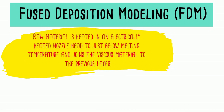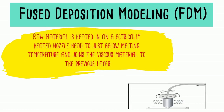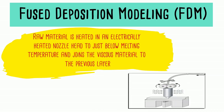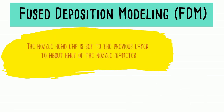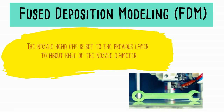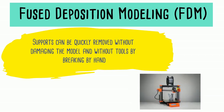Raw material is heated in an electrically heated nozzle head to just below melting temperature and joins the viscous material to the previous layer. The nozzle head gap is set to the previous layer to about half of the nozzle diameter. Supports can be quickly removed without damaging the model and without tools, by breaking by hand.